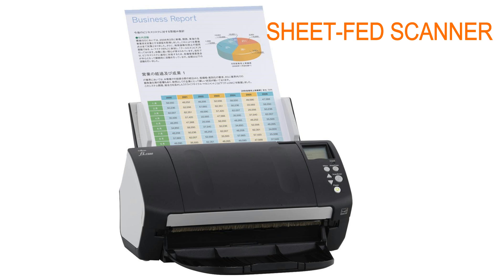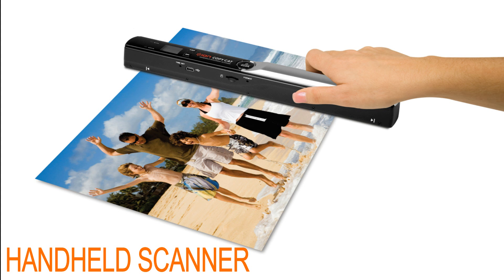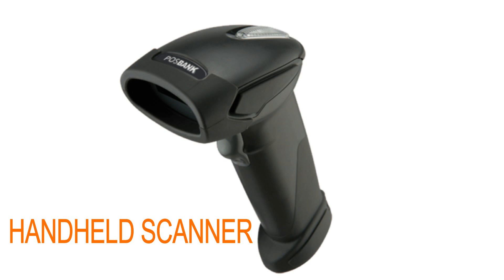The second type, sheet-fed scanners, are similar to flatbed scanners except that the document is moved while the scan head is immobile. Handheld scanners use the same basic technology as the flatbed scanner but depend on the user to move them, so this type of scanner does not provide good image quality.